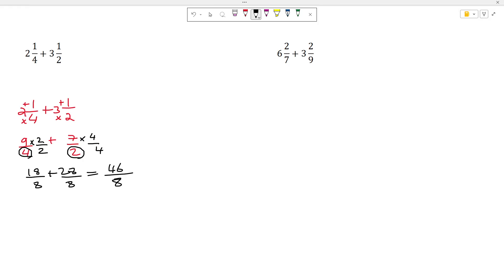Now using this method, once we have reached this state we are going to check if we can simplify them. If we take a look at it, both the numerator and the denominator are even numbers. So we can easily go ahead and divide both with 2. 46 divided by 2 is going to give us 23, and 8 divided by 2 is going to give us 4.